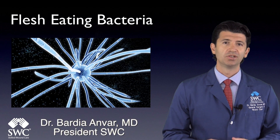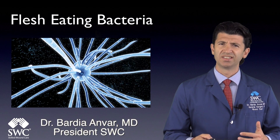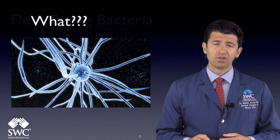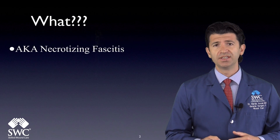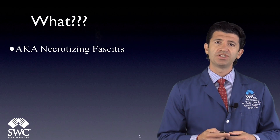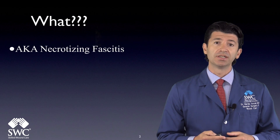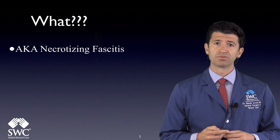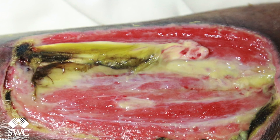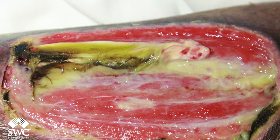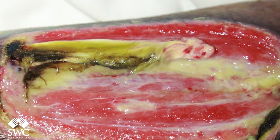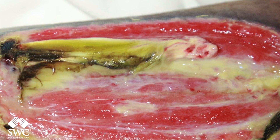Flesh-eating bacteria — what is it and how does it infect patients? In the medical literature, we call flesh-eating bacteria necrotizing fasciitis, which is basically a spreading fascial infection that goes between the muscle and the subcutaneous tissues.